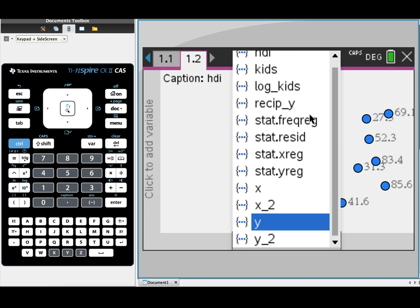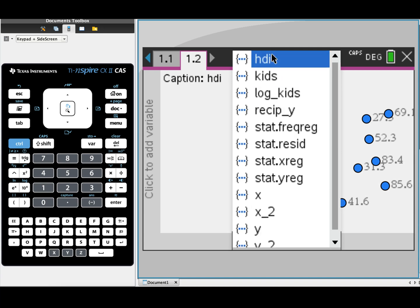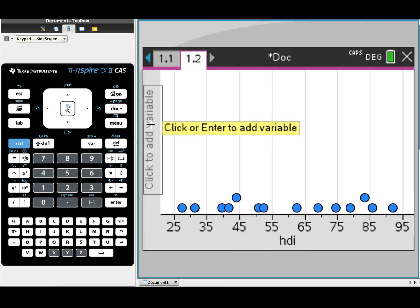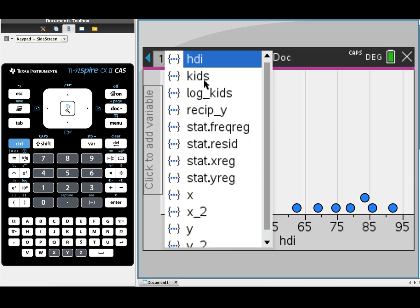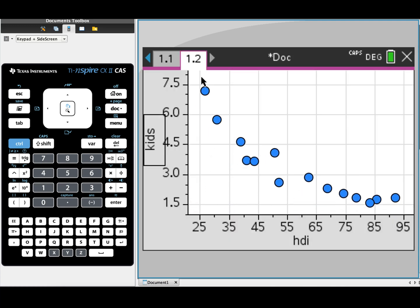At the bottom, we have to select our explanatory variable. In our case, it is HDI. And on the y-axis, we need to choose our response variable. In my case, I've called it kids.